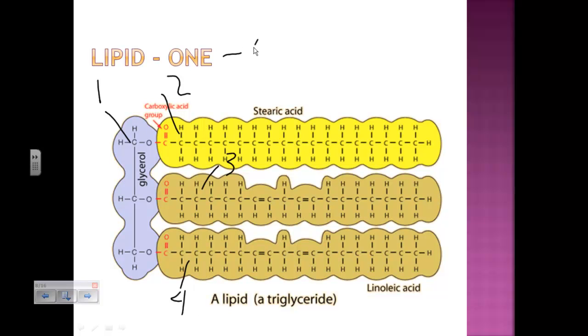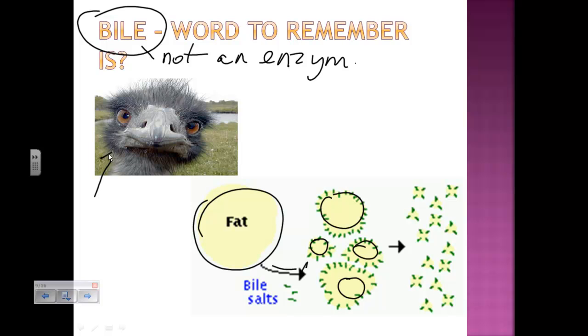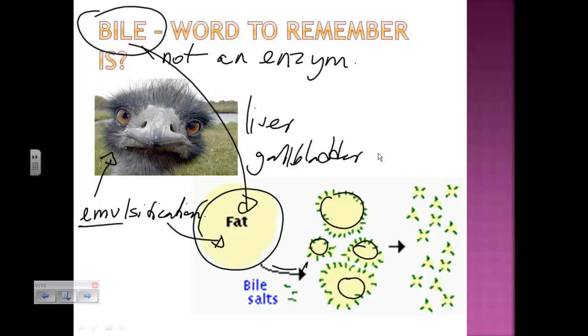There is only one enzyme, lipase. But we also want to recall bile, because although bile is not an enzyme, not an enzyme, it physically digests fats. It takes a big blob of fat and breaks it down into smaller blobs. And this word we remember, the cute little birdie with the googly eyes, emu, right? Emulsification is the physical digestion of fat by bile. Bile is made by the liver, stored in the gallbladder, and released into the small intestine.